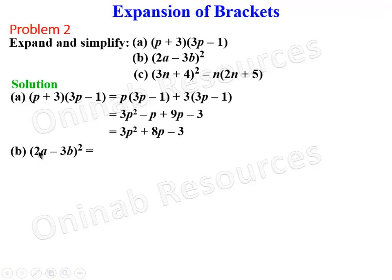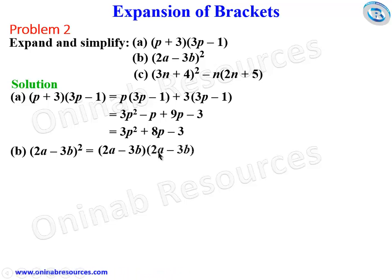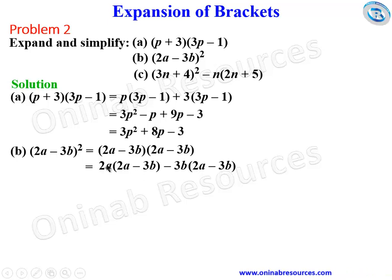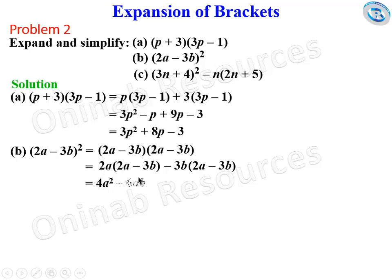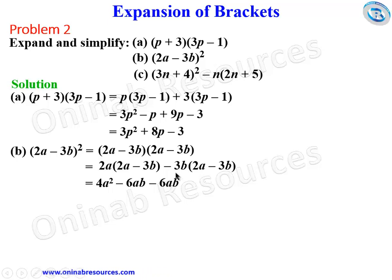For part b we have (2a − 3b) all squared, which means we multiply the bracket by itself: (2a − 3b)(2a − 3b). We use 2a to multiply the second bracket and minus 3b to multiply the second bracket. Expanding: 2a times 2a gives 4a squared, 2a times minus 3b gives minus 6ab, minus 3b times 2a gives minus 6ab, and minus 3b times minus 3b gives plus 9b squared.